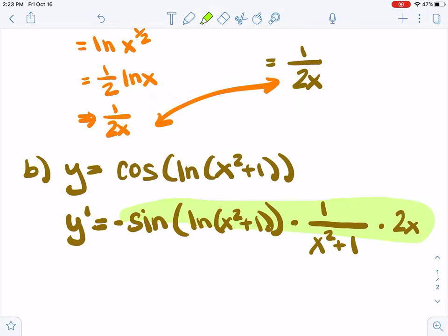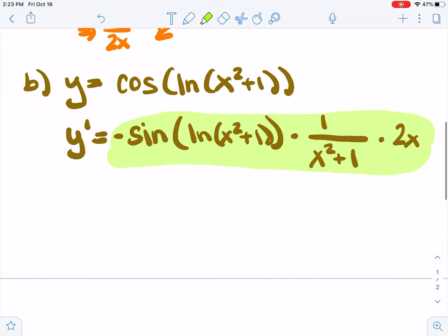There's not a lot we can do there to clean that up. That's pretty much as simplified as it gets, unless you want to write the 2x over the x squared plus 1.